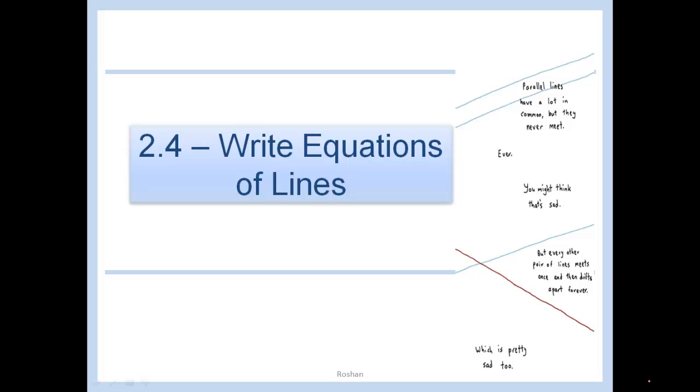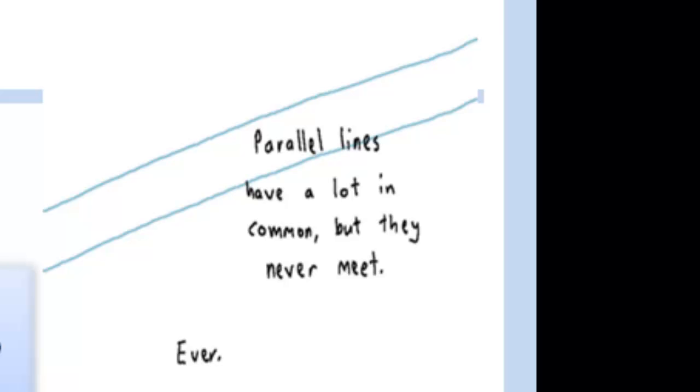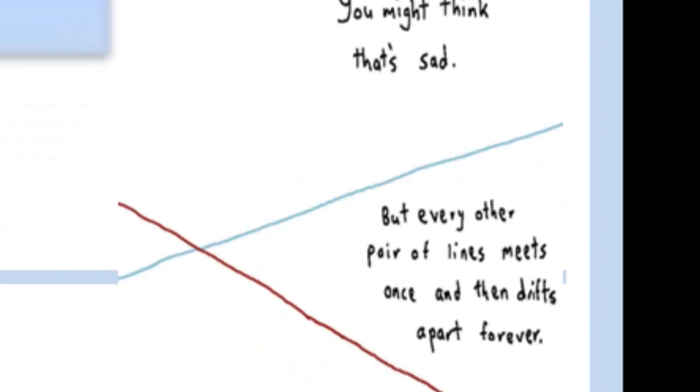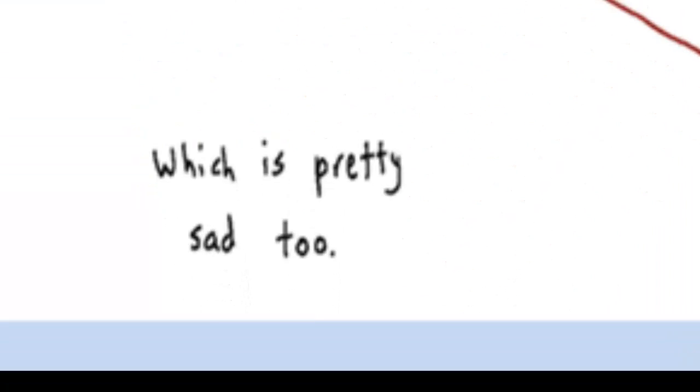2.4, write equations of lines. Parallel lines have a lot in common, but they never meet, ever. You might think that's sad, but every other pair of lines meets once and then drifts apart forever, which is pretty sad too.